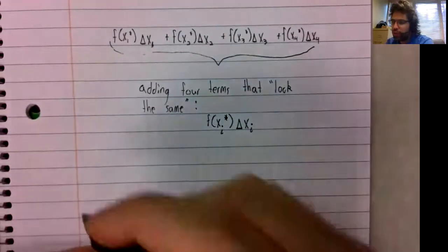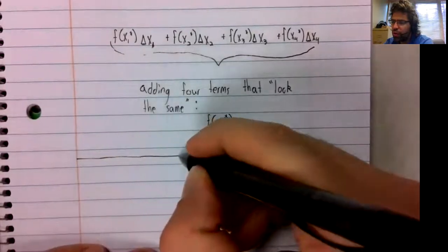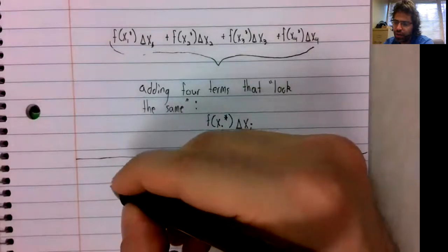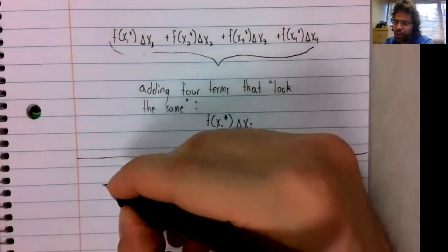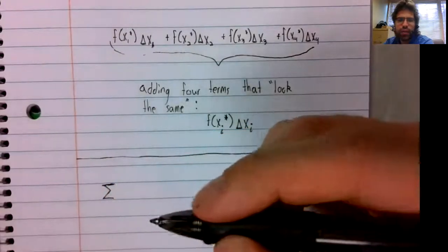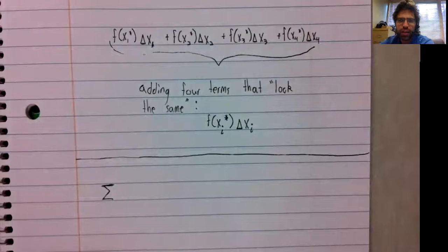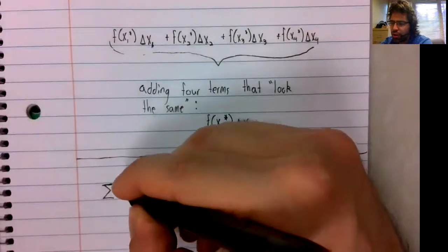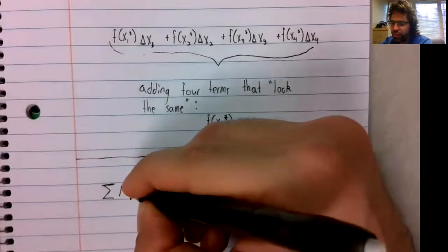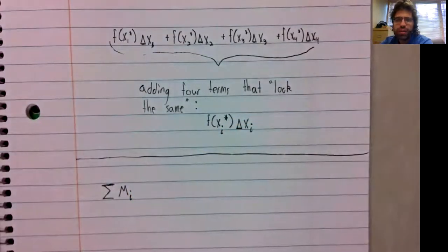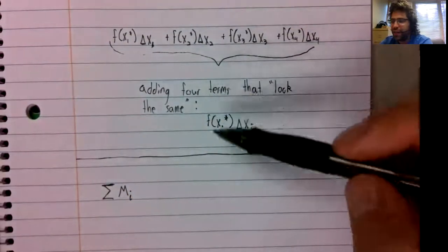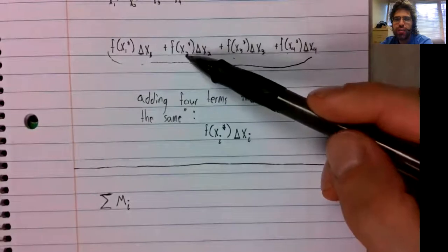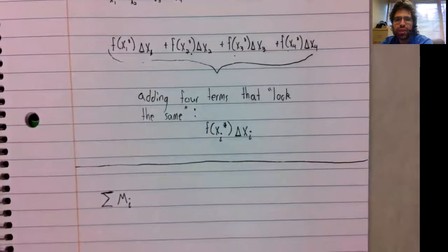And sigma notation, also called summation notation, gives us a compact way of writing something like this. You've got the sum of some terms, and they've got, let's call it I in them. All four of these terms are X sub I star times delta X sub I.